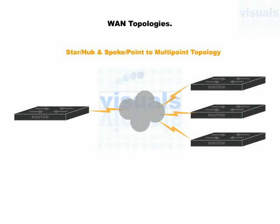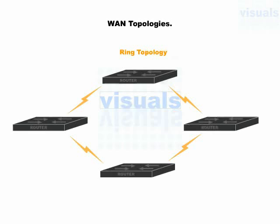Here you can see ring topology for wide area networks. Implementing ring topology for WAN performs the same as ring topology under local area network. Under wide area network, each device connects to the other device using a WAN connection, such that each device can receive data from one link and transmit it on the other, forming the shape of a ring. This is how ring topology is formed under wide area networks.